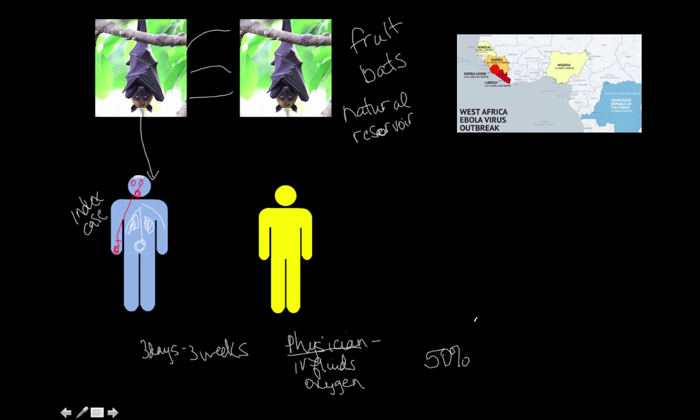So now that we have our first index case infected, how does this person transmit the virus to another person? The easy answer is that it spreads through bodily fluids.